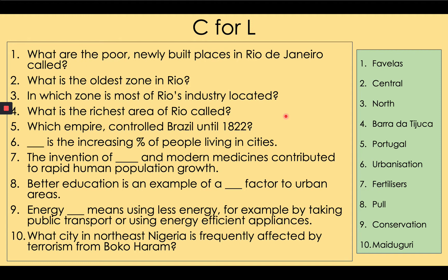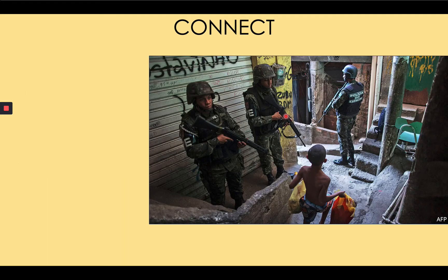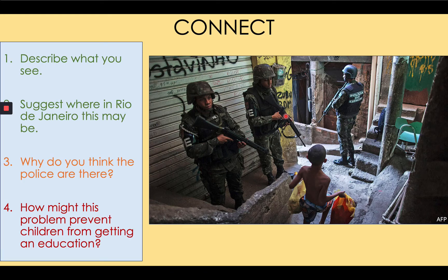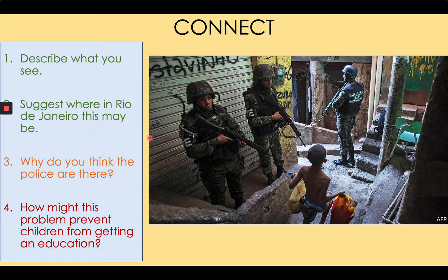To introduce the favelas of Rio de Janeiro I'm going to show you a picture and then some questions. Please answer the questions using your understanding. Here's a scene in a typical favela in Rio de Janeiro. You should see graffiti on the walls, garages, broken derelict brick or concrete walls, a child running down a very narrow alleyway with bags, soldiers with guns, police on the street. It looks like a fairly poor or dangerous scene.